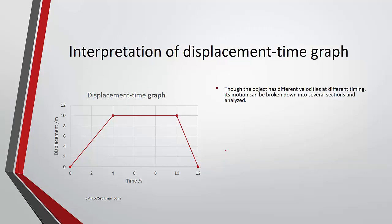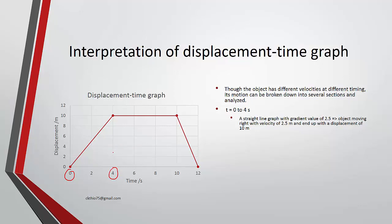Though the object has different velocities at different timings, its motion can be broken down into several sections and analyzed. From 0 to 4, it is a straight-line graph with a gradient of 2.5, meaning it is moving at a velocity of 0.25 meters per second, reaching a displacement of 10 meters. From 4 to 10, it is a flat line, meaning the object remains stationary at 10 meters.